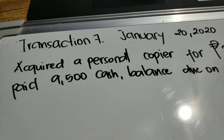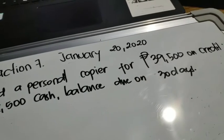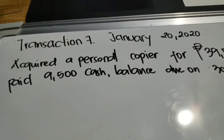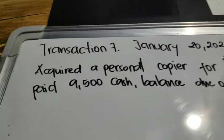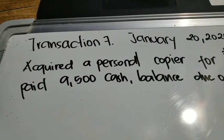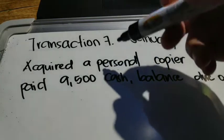An example of this type of transaction is: acquired a personal copier for 39,500 on credit, paid 9,500 cash, with the balance due in 30 days. Why is this transaction not to be recorded in the general journal?